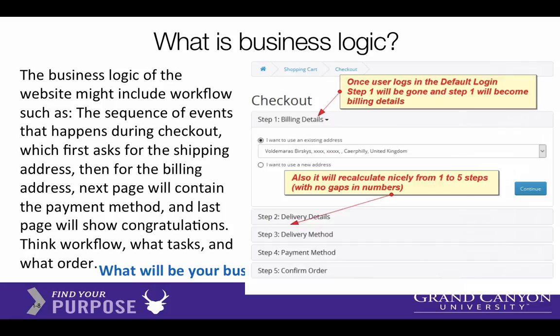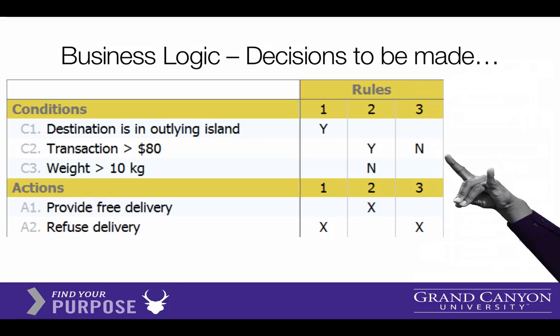Here's another example: a checkout system labeled step one through five. We're thinking of a Java class that would keep track of the steps that have been done and the data that's been entered — not the control of the form, but the logic behind it. Sometimes business logic relates to the types of decisions you make, like whether the destination is far away, whether the transaction is more than $80, whether the package is heavy, or whether to provide free delivery. The rules are simple to program in if-then statements, but that code is our business logic.